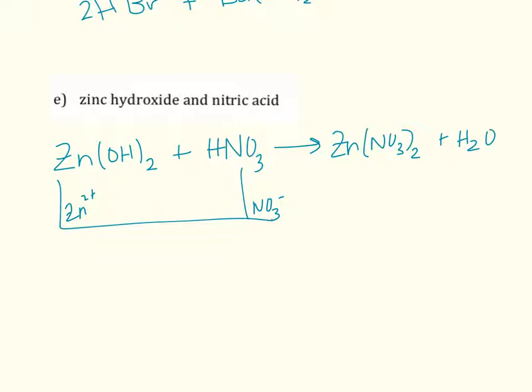So Zn(NO3)2, I need two of these for every one of these because this is negative one and this is plus two. So I need two nitrates to balance out that charge. Now to balance it, I have two nitrates right here.